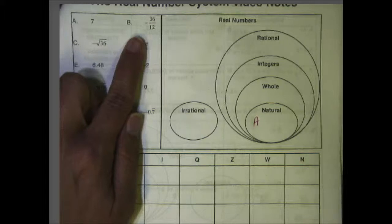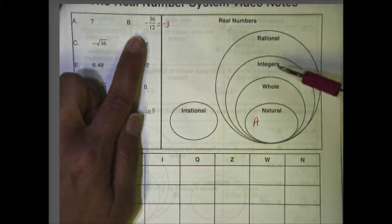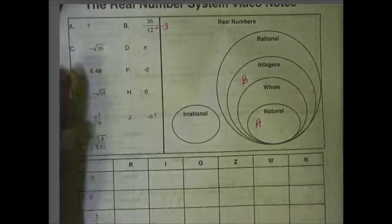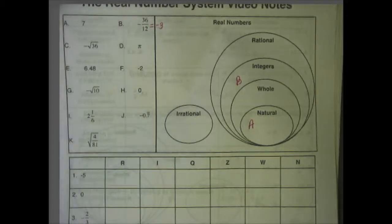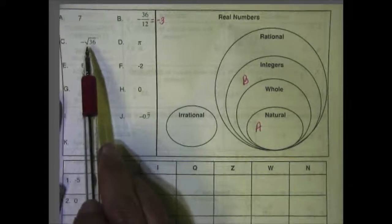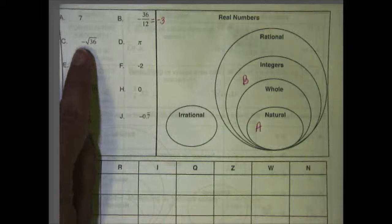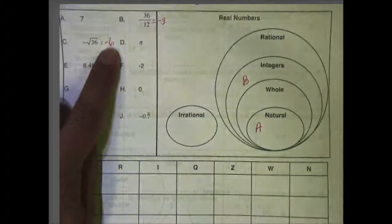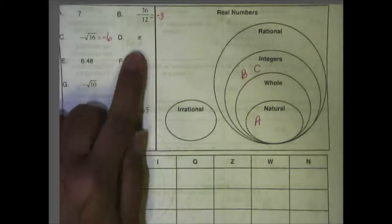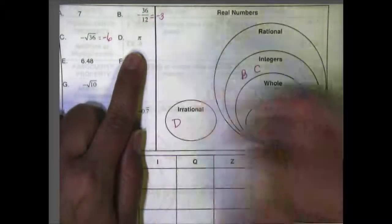Let's look at B: negative 36 over 12. If I simplify that, I get negative 3. Negative 3 is going to fall under integers because that's the first place where you see a negative number in the category, so I would put B under integers. Letter C says the negative square root of 36. We want the negative on the outside — if it's outside, we take the square root of 36, which is 6, and make it negative. Since it's negative, again, it's going to go under integers. We talked about pi in the review — pi is irrational, so D will go under irrational.